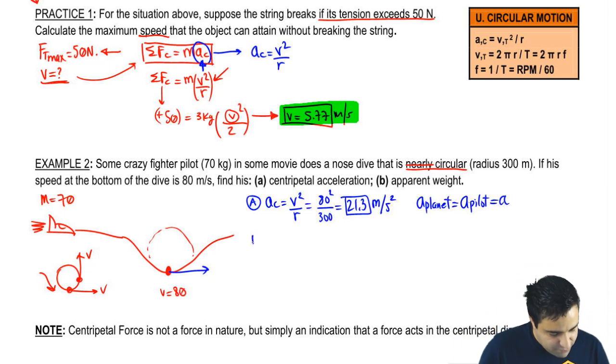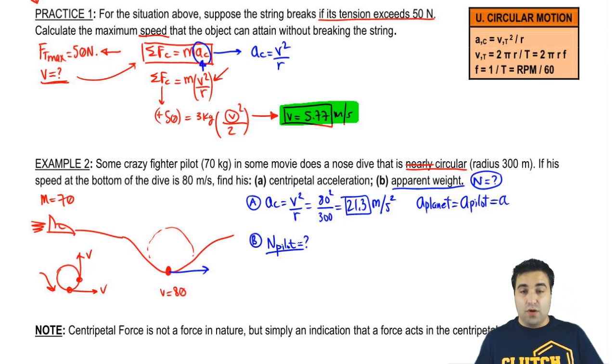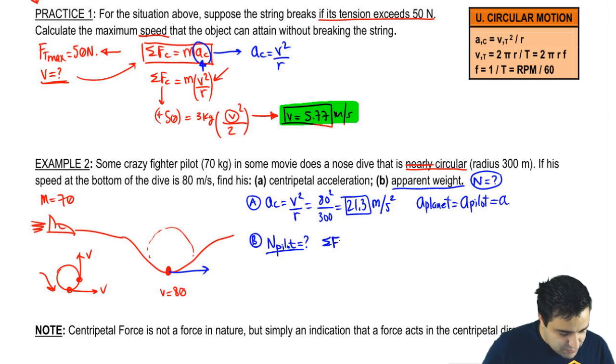Next thing is to ask for his apparent weight. Apparent weight means normal, means normal. So what is the normal on the pilot at that point? Normal is a force, and the only way you're always going to find normal is by using f equals ma. So sum of all forces in the centripetal direction on the pilot is mass of the pilot times the acceleration of the pilot, which is a centripetal acceleration.